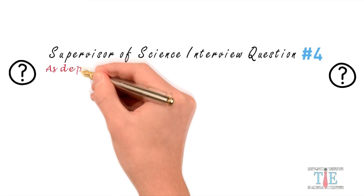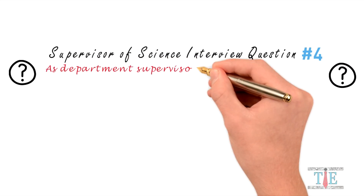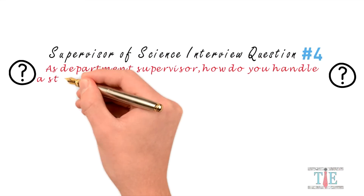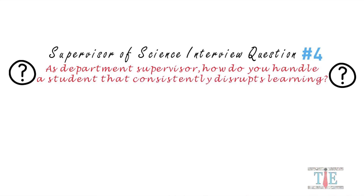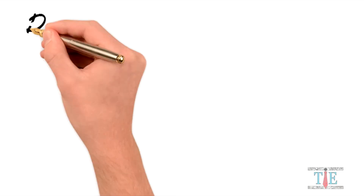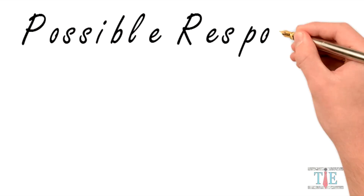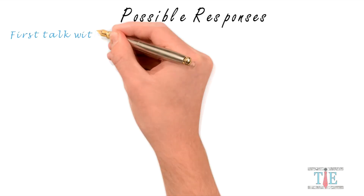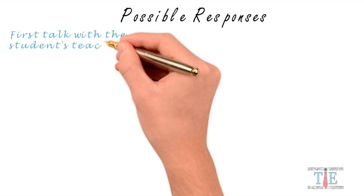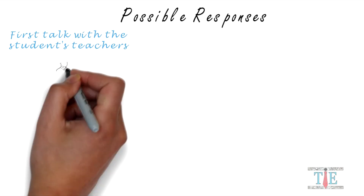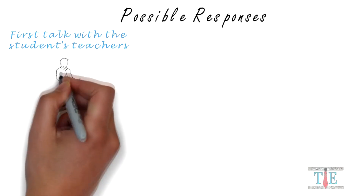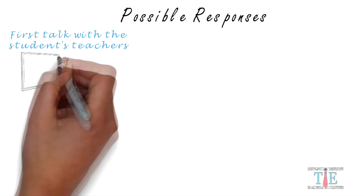Interview question number four: As department supervisor, how do you handle a student that frequently disrupts learning? There are many acceptable answers, but here are just a few possible responses. First, talk to the student's teachers. When speaking with the teachers, you get a clear idea of what some of the actual problems are with the student.